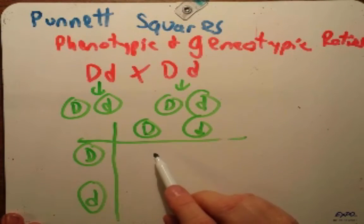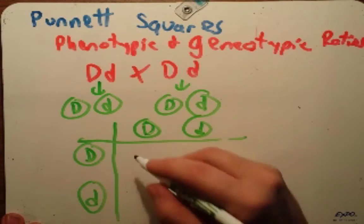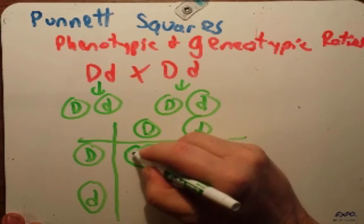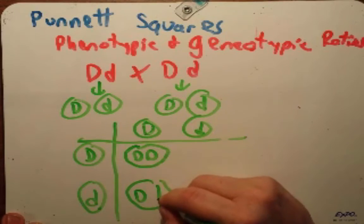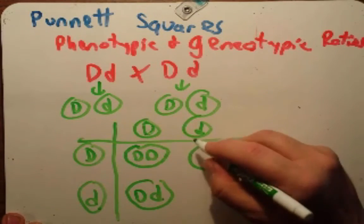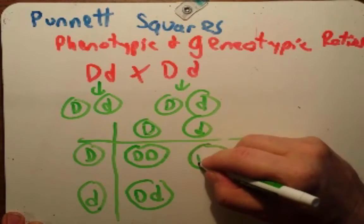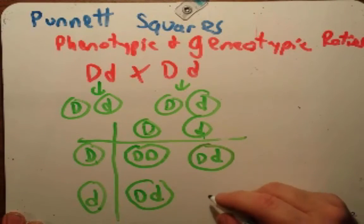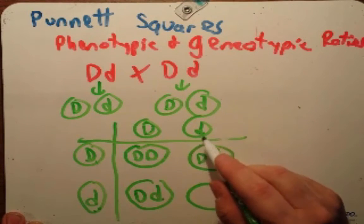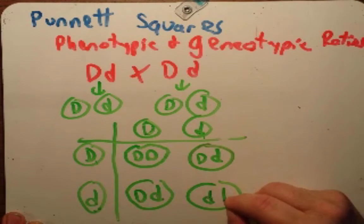We then perform the crosses here on the board. So big D and big D, that's going to give us big D, big D embryo. This one's going to give us a big D from this parent and a little d from this parent, big D, little d. This parent will get one big D, one little d. And then finally we've got little d and little d gametes that make little d, little d.